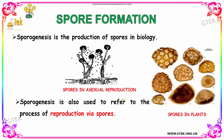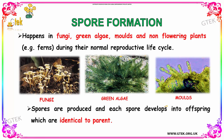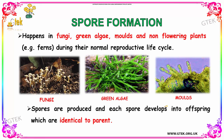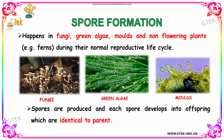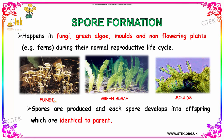Let us see about spore formation. Sporogenesis is the production of spores in biology, and it is also used to refer to the process of reproduction via spores — it is a form of asexual reproduction. You can see the spores represented here. Spore formation happens in fungi, green algae, mosses, and non-flowering plants such as ferns during their normal reproductive life cycle. Spores are produced, and each spore develops into offspring which are identical to the parent.